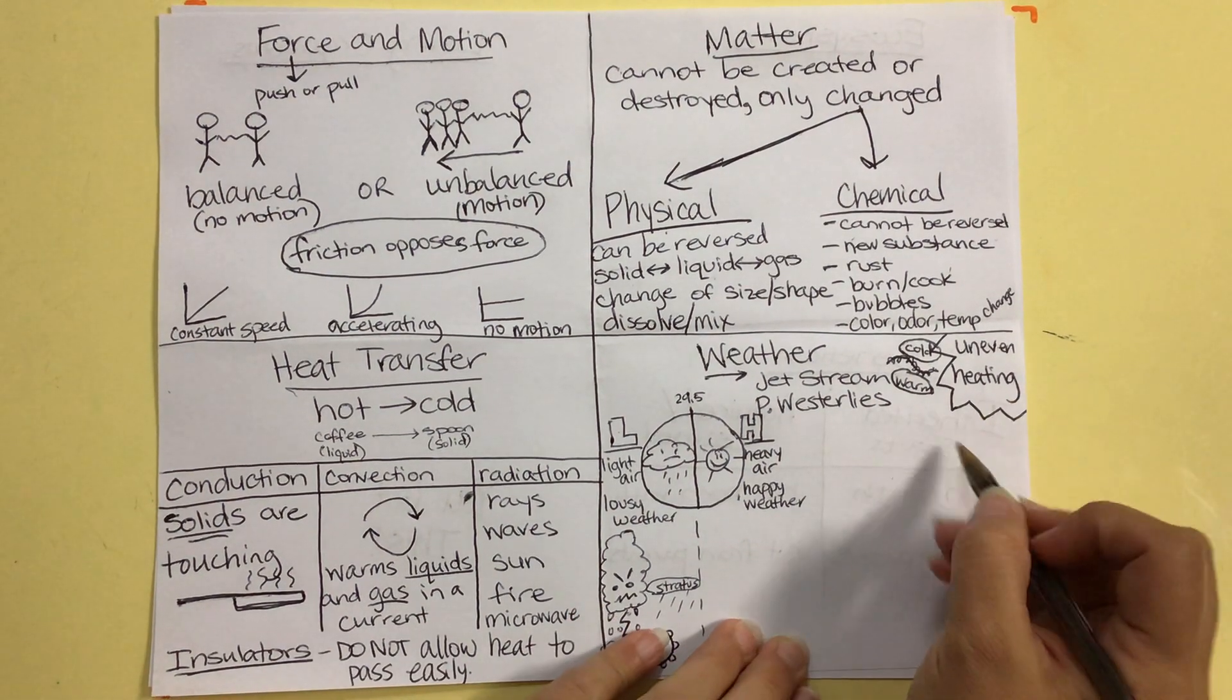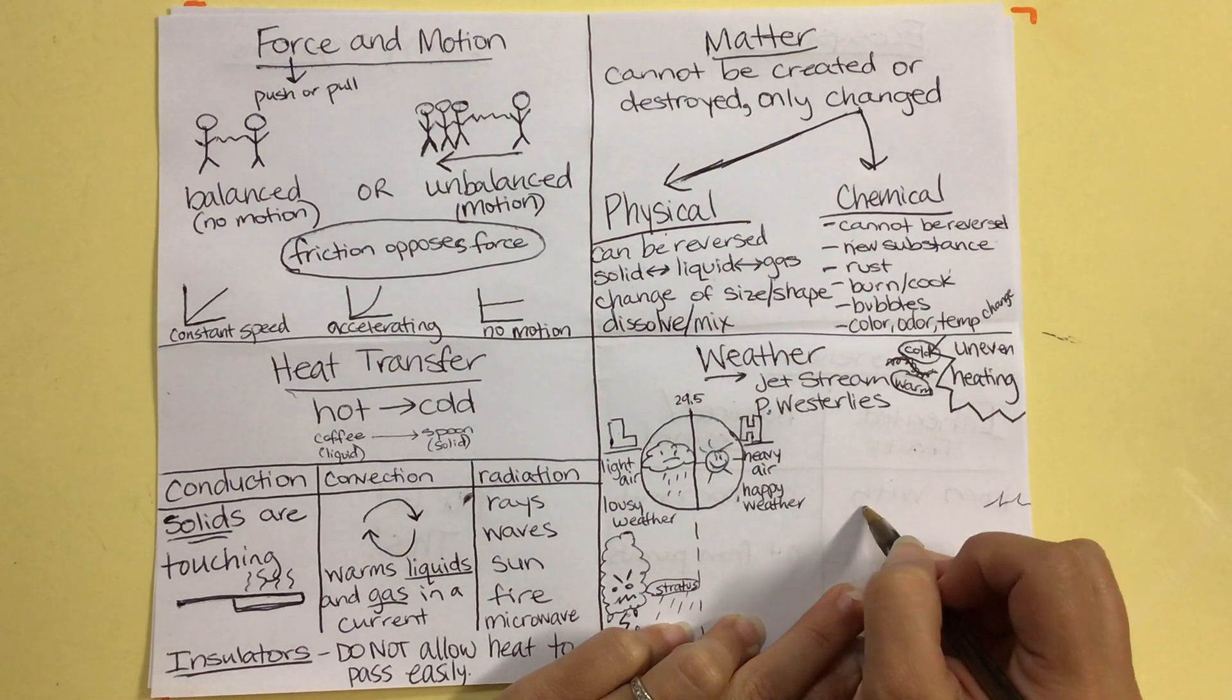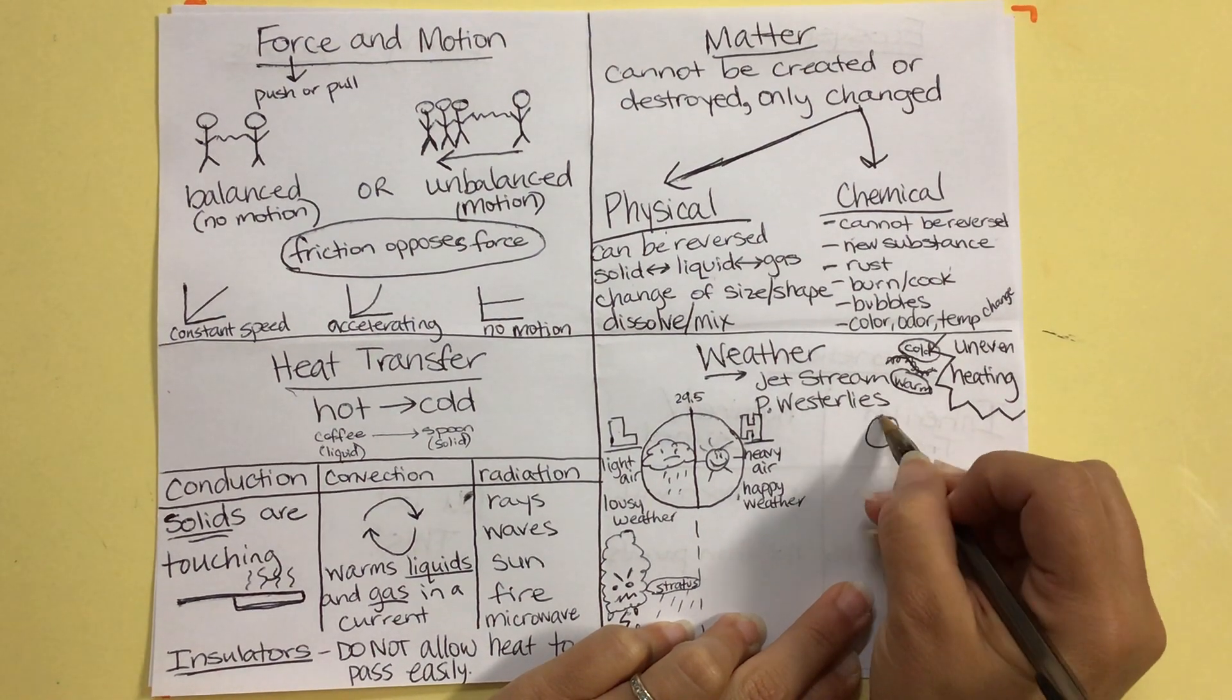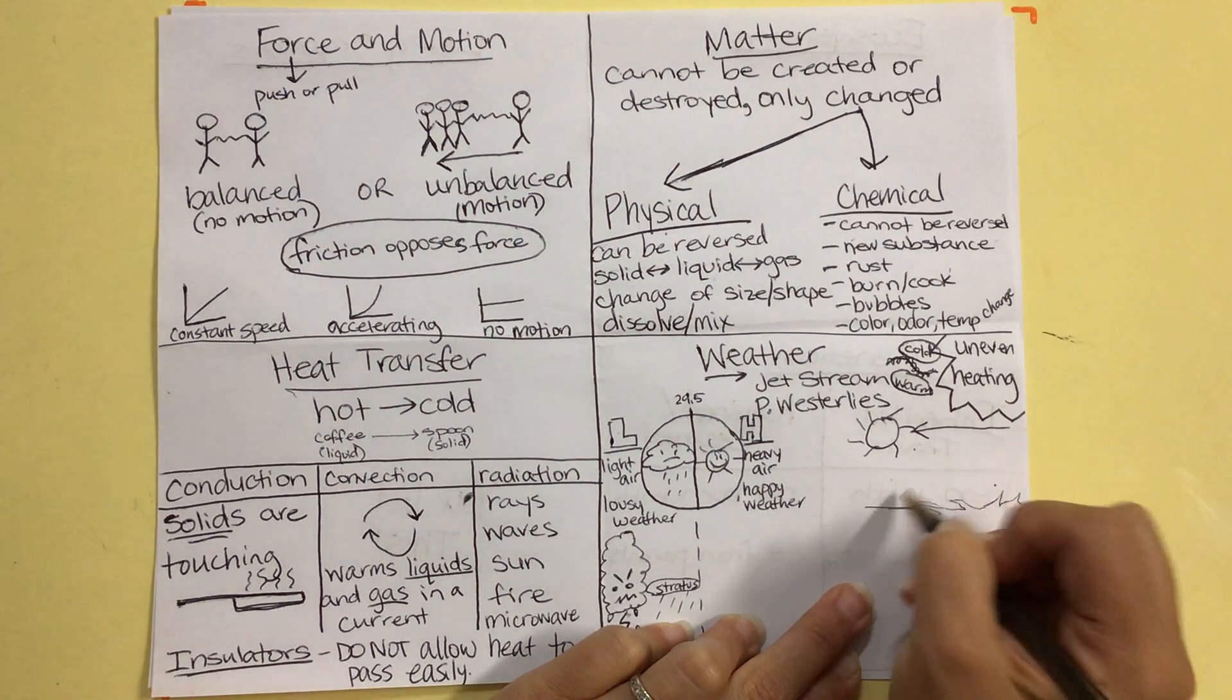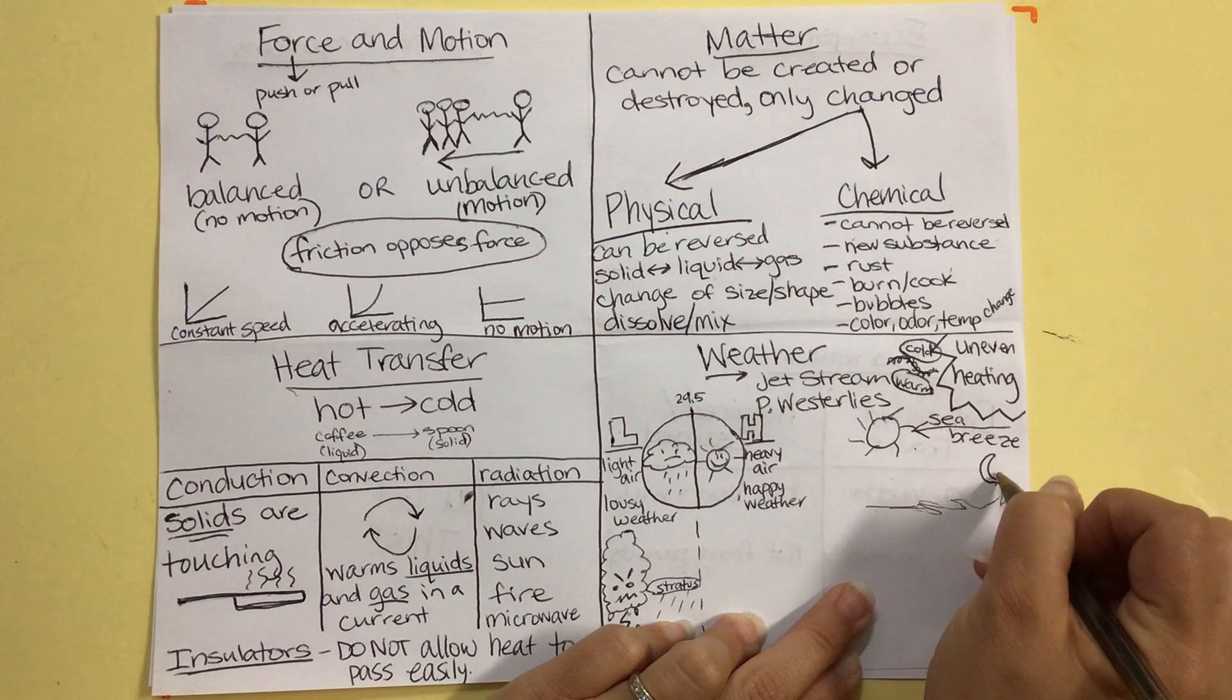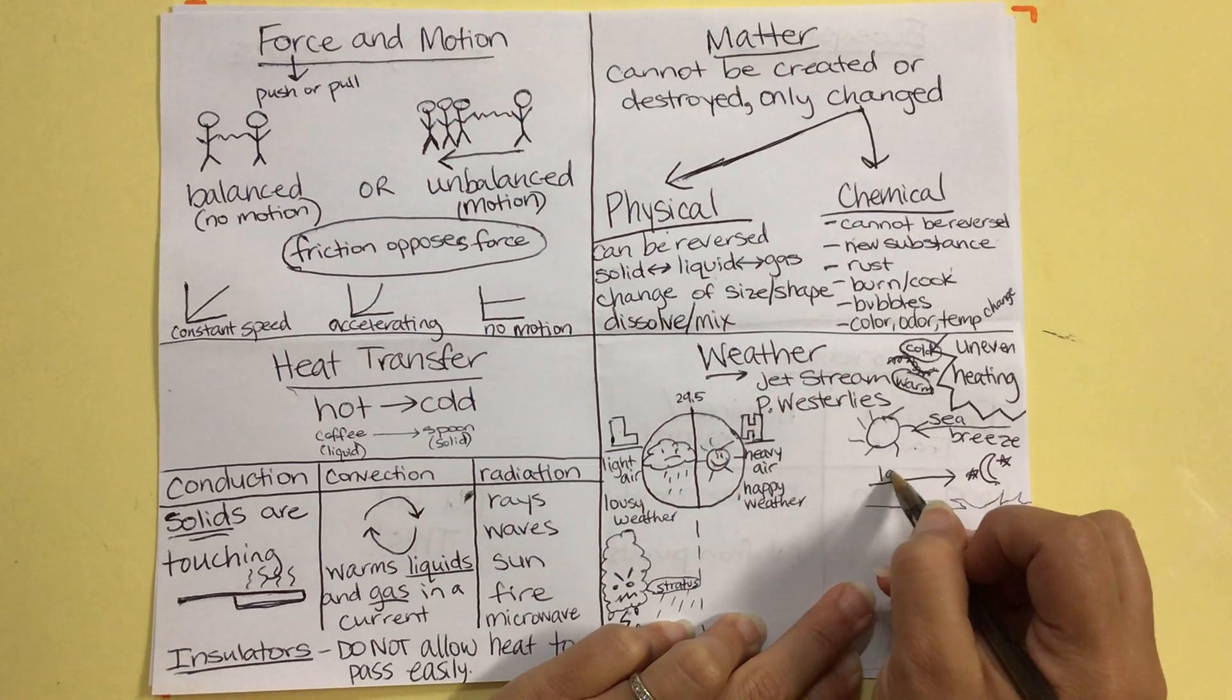Our local weather patterns look like a sea breeze, which is when the wind blows from the sea. We'll draw us a little sea there. A little ocean. We'll pretend that's the ocean. So, during the day, the wind blows from the sea to the land at the beach. And, at night, it flip-flops. At night, the wind blows from the land to the sea. And, you've got a land breeze.